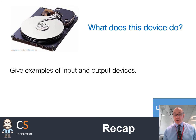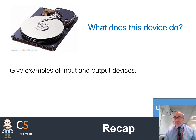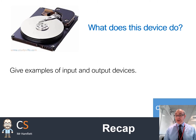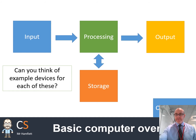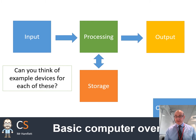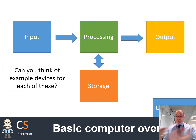We're going to start off with recapping hardware. On the screen at the moment you can see an example of a storage device — a magnetic hard drive, whose job is to store things on your computer when the power is switched off. Inside a computer, you have four main elements: input devices, output devices, processing — which happens inside the computer to turn inputs into outputs — and then storage, where we might save or load something.